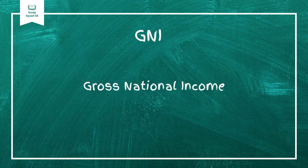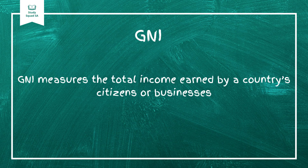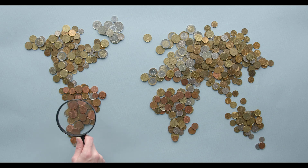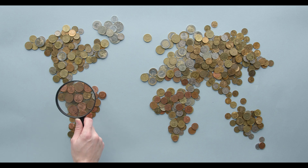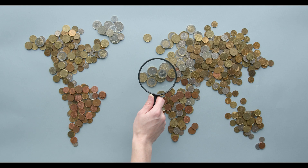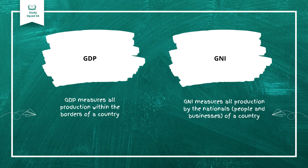Now let's talk about GNI, or Gross National Income. GNI measures the total income earned by a country's citizens and businesses, whether they're at home or abroad. For example, if a South African company earns profits overseas, that's added to GNI. But if a foreign company earns profits in South Africa, that's subtracted. This makes GNI different from GDP: while GDP focuses on production within a country's borders, GNI focuses on income earned by its nationals.